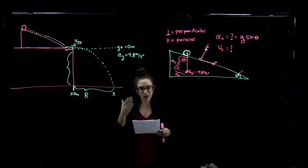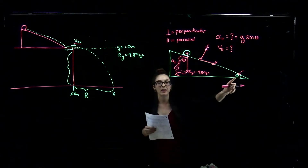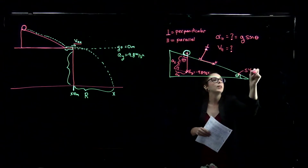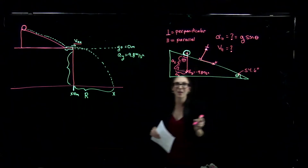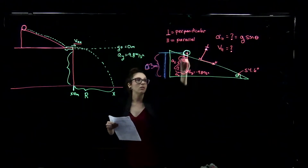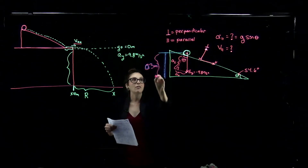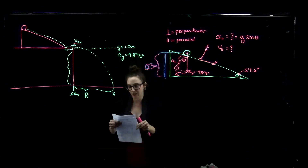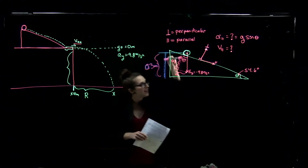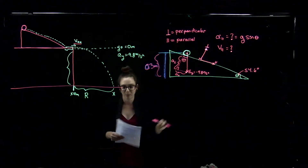We're given a couple of pieces of information: the angle is 54.6 degrees, and the vertical height of the ball above the horizontal is 0.3 meters. We'll use this information to figure out the velocity of the ball parallel to the plane.